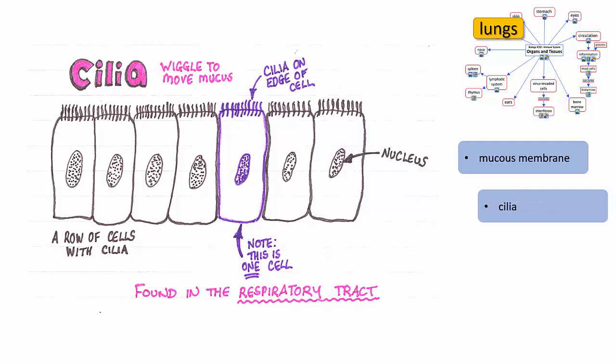Cilia move the sticky mucus along with the pathogens and dust. There are also white blood cells, macrophages and dendritic cells, and antimicrobial peptides secreted by the respiratory tract.